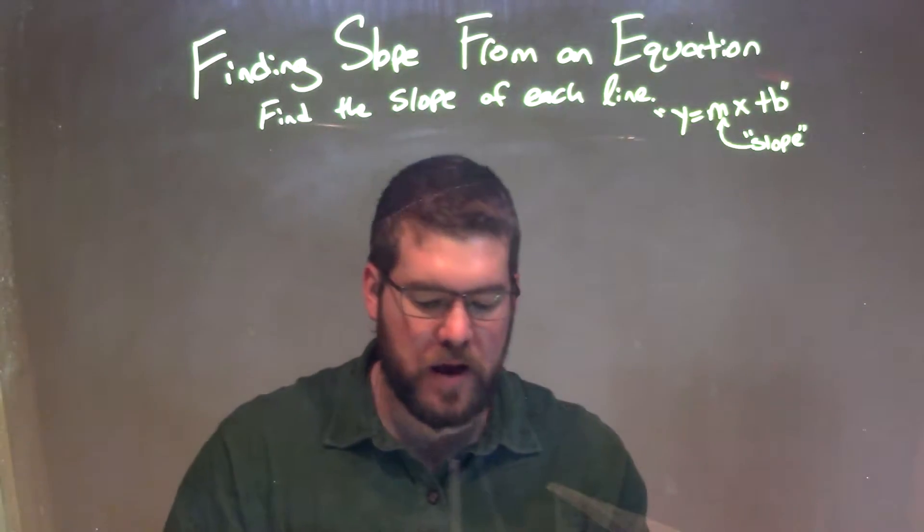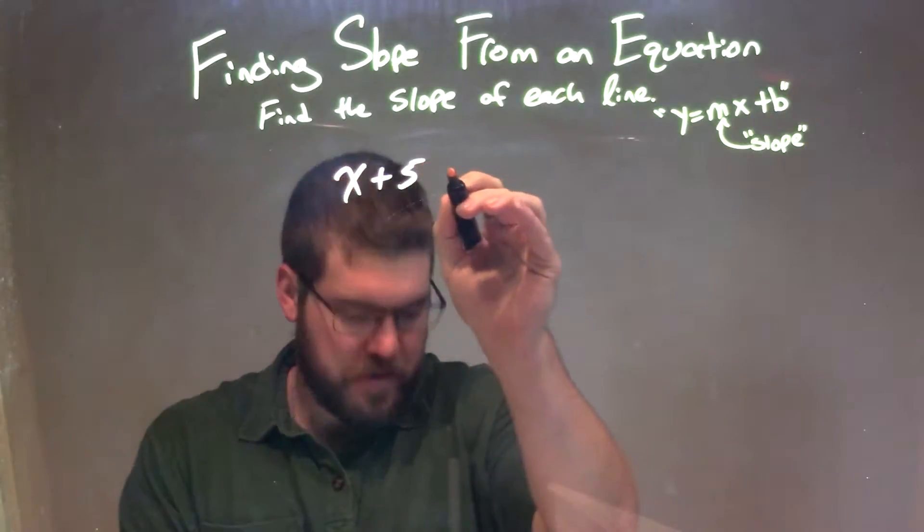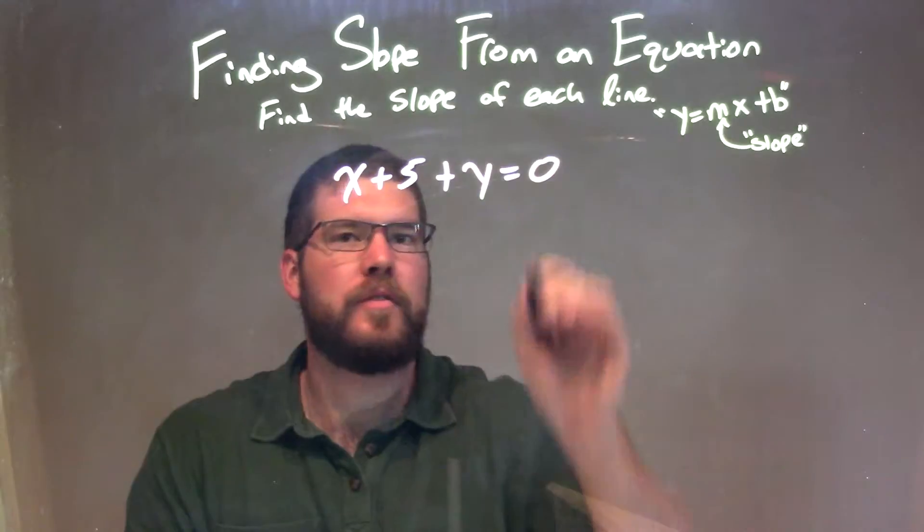We're going to find the slope of each line. So if I was given this equation, x plus 5 plus y equals 0.